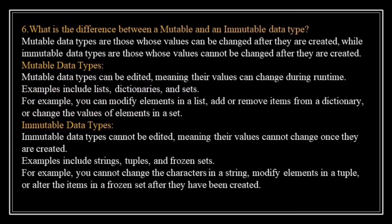What is the difference between mutable and immutable data types? Mutable data types are those whose values can be changed after they are created, while immutable data types are those whose values cannot be changed after they are created. Mutable data types can be edited, meaning their values can change during runtime. For example, you can change elements in a list, add or remove items from a dictionary, or change the values in a set. Immutable data types cannot be edited. Examples include strings, tuples, and frozen sets. You cannot change the characters in a string, change elements in a tuple, or alter items in a frozen set after they have been created.